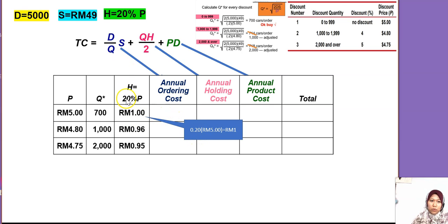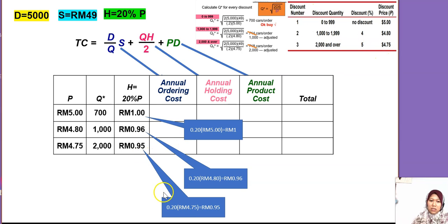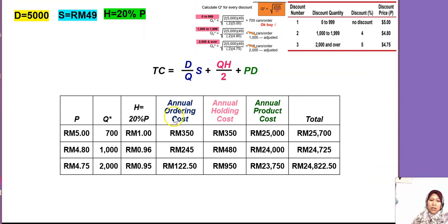Calculate H for each price: H₁ = 0.2 × 5 = 1 ringgit; H₂ = 0.2 × 4.80 = 0.96; H₃ = 0.2 × 4.75 = 0.95. Now calculate annual ordering cost using D/Q × S. For the first discount: 5000/700 × 49 ≈ 350. Complete all the boxes carefully, then total up each discount column.